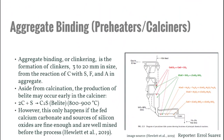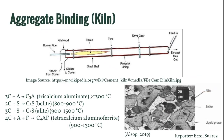The third and final unit process is aggregate binding or clinkering. The materials containing silica, alumina, and iron oxide react with quicklime to produce clinkers about 3 to 20 millimeters in size. While these reactions are supposed to happen at the kiln, some quicklime and silica react early in the calciner forming some belite, as belite production can occur at 800 to 900 degrees Celsius. However, this early belite production does not happen in significant amounts. The early production of belite can also happen in the preheater.